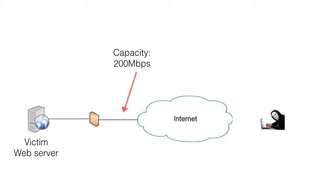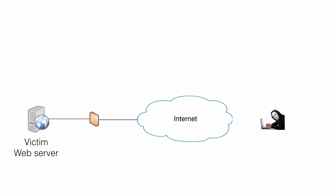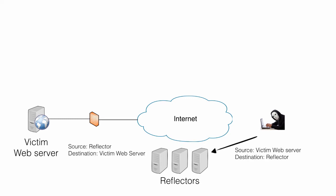If EvilBob, who intends to attack the web server, has more than 200 megabits of bandwidth at home, he could in theory create the attack all by himself. However, doing that would most probably draw attention from his ISP when generating that massive amount of traffic. Instead of sending traffic directly to the victim web server, he generates traffic to reflectors — servers on the internet with no intention of being part of any DoS attack. He sends traffic to the reflectors using the victim web server as the spoofed source address, making the reflectors believe the traffic came from the web server, so they send replies back to it.